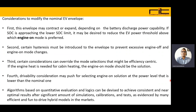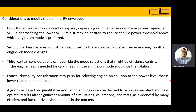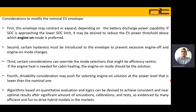Second, certain hysteresis must be introduced to the envelope to prevent excessive engine off and engine on mode changes. In that case, the envelope characteristics will get modified and the engine will be turned on by shifting the envelope. Third, certain considerations can override the mode selection that might be efficiency-centric. For example, if engine heat is needed for cabin heating, the engine-on mode should be turned on even though the envelope is not expecting engine mode.